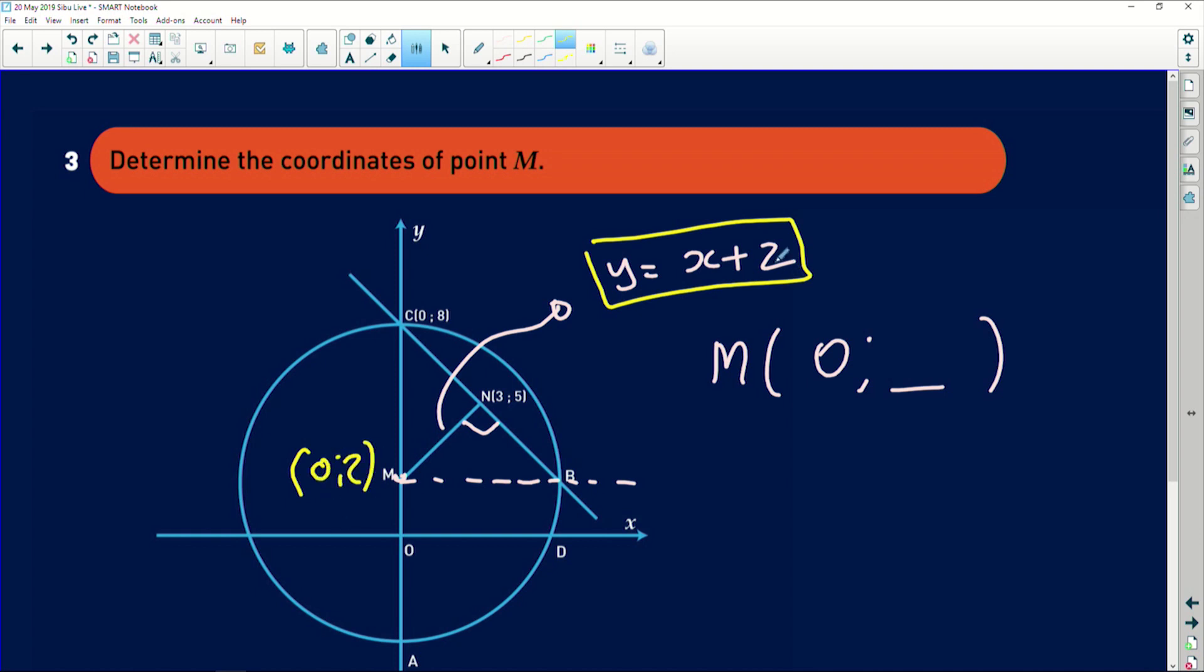Clearly the coordinates of M must be (0, 2) because c represents the y-intercept of the straight line we're dealing with. Therefore the coordinates of M are simply 0 and 2. It's a very nice question, not complicated, easy and straightforward.